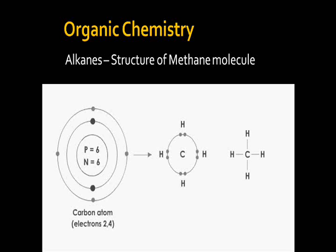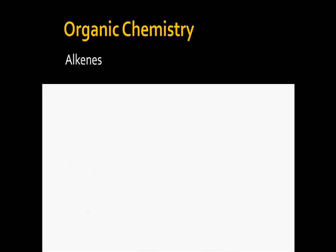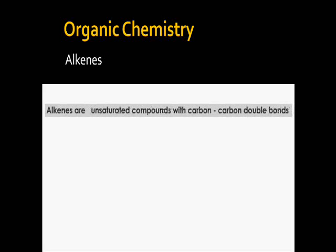The structural formula of methane shows four single covalent bonds. Alkenes are unsaturated compounds with carbon-carbon double bonds. Unsaturated hydrocarbons are those which have either a carbon-carbon double bond or a triple bond. They are also called olefins, which means oil formers.